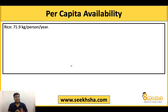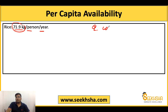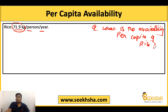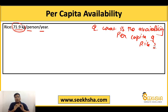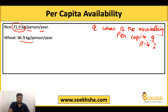For per capita availability, these are approximate figures — you need a general idea so that the options are clear when answering. Exact numbers are not always needed. Rice per capita availability is 71.9 kg per person per year. If the options are very close — like 71.4 kg and 71.9 kg — you need the exact number, but if the options are like 65 or 59, an approximate idea is enough. Wheat per capita availability is 66.9 kg per person per year.